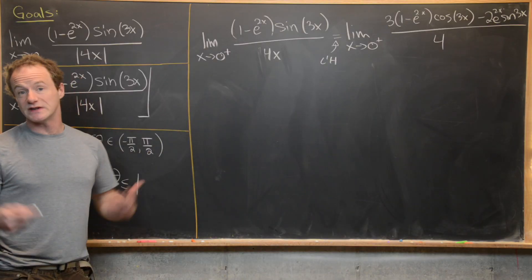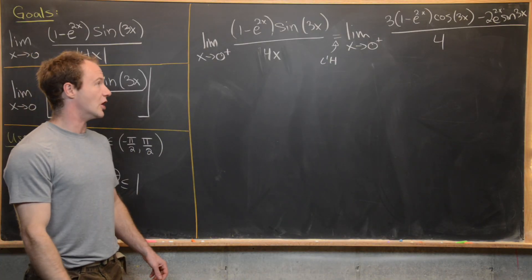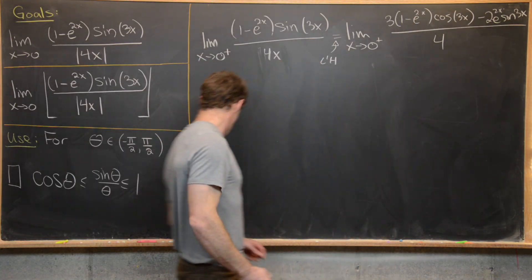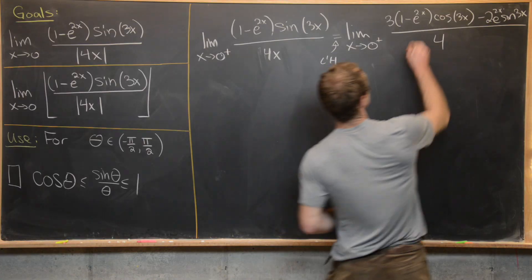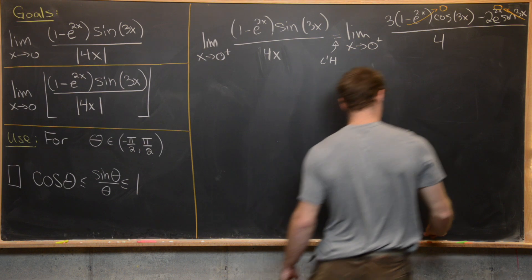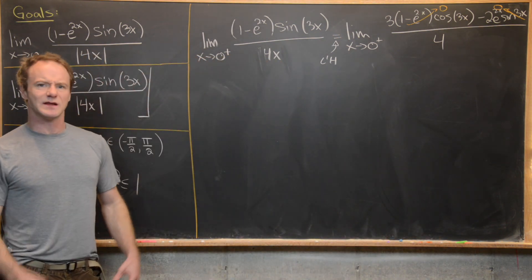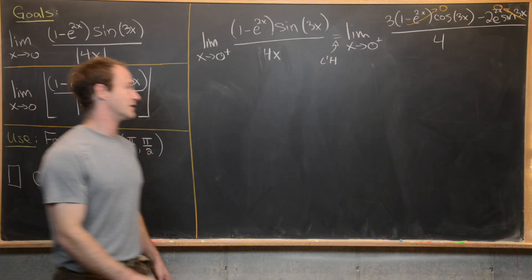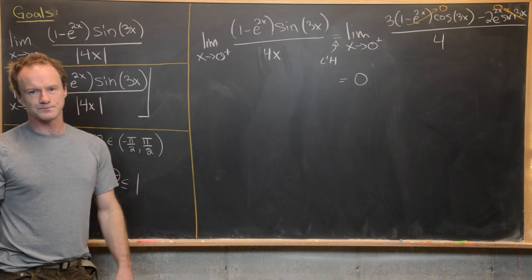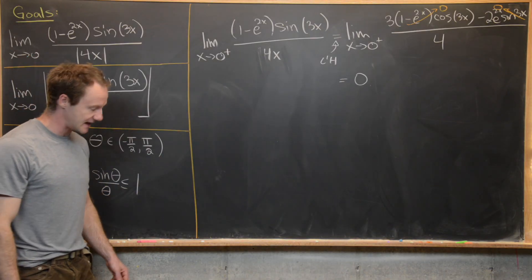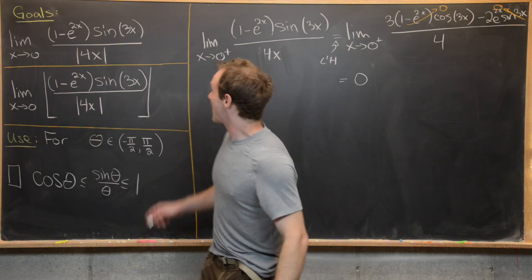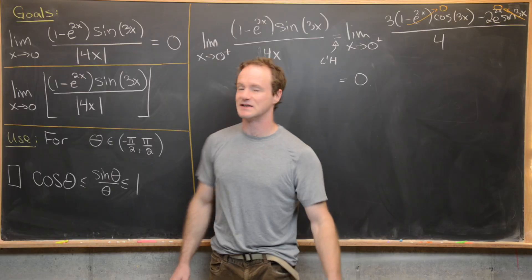We take the derivative of the denominator, which equals just 4. Now we check whether we still have an indeterminate form. Plugging in zero gives 1 minus e to the 0, which is 0, and sine of 3 times 0, which is also 0. So this transforms the limit into something not indeterminate — it's 0 over 4, making the limit 0. The left-handed limit gives the same result, so this first limit equals 0.